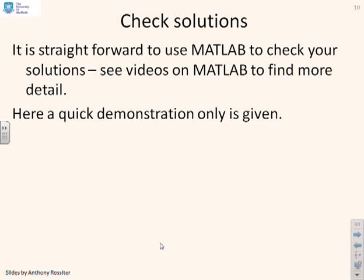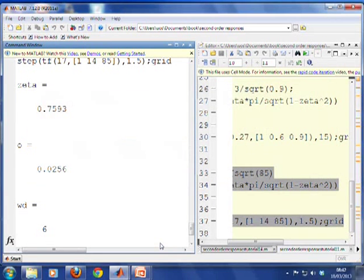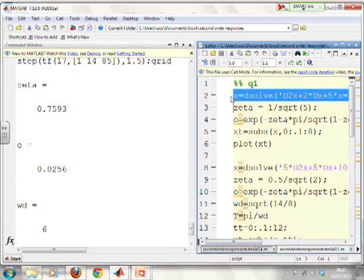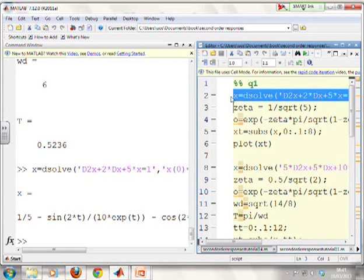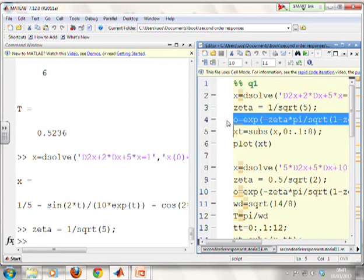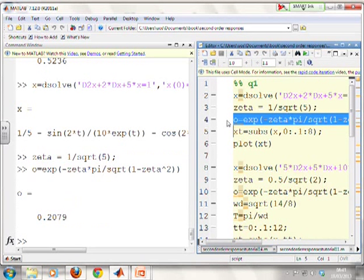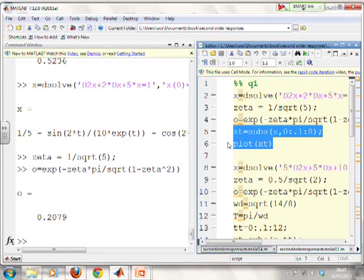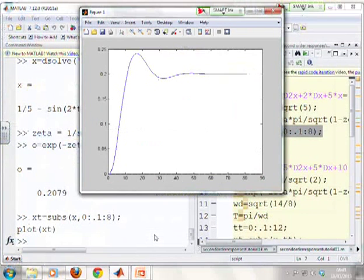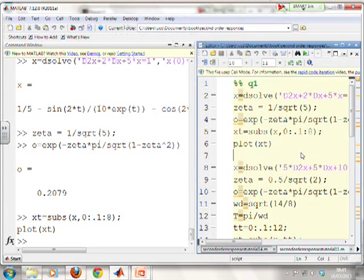Now for completeness, we'll just show you how you can use MATLAB to check your answers. So if I go at the top here, you'll see I can use D-solve to solve. This is the first example. To find the answer, I can solve for ζ, and you'll see there it was 1 over square root of 5 for the first one. I can solve for the overshoot, plugging in that formula. And I can solve the numerical values of x and plot them. And if we go and look at the figure window, there's, see, the two are pretty much the same. In other words, our sketch was a good representation of what you're actually going to get.